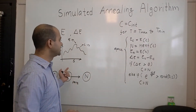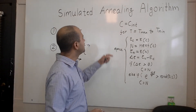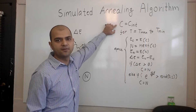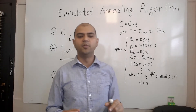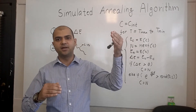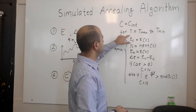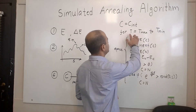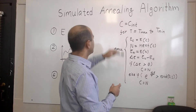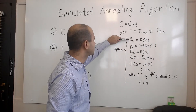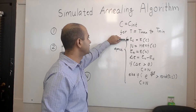Once we have these definitions laid out, I will explain the simulated annealing algorithm. The idea is to start with an initial or random configuration. We introduce a variable known as temperature. Just as in annealing, we start with an initial high temperature T max, which is a monotonically decreasing function that slowly decreases to T min. For every value of temperature, we first compute the current energy EC of the system for the current configuration.